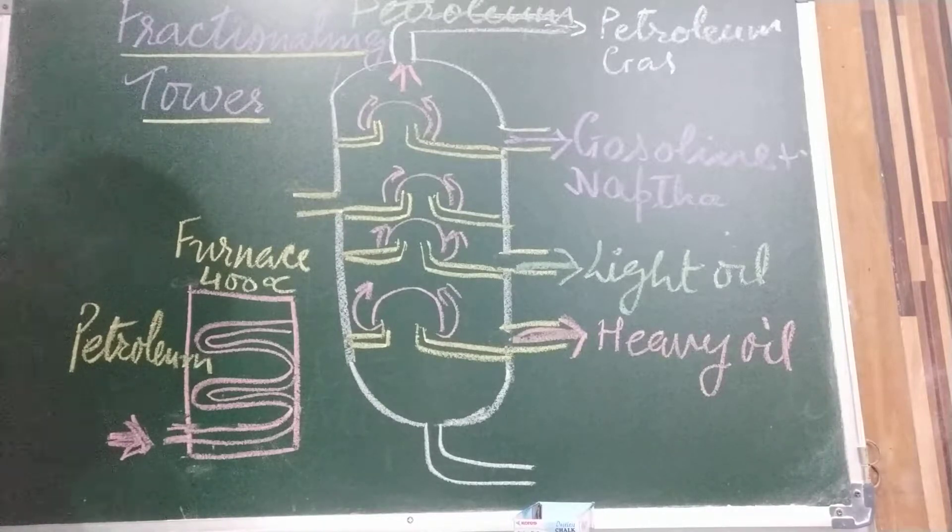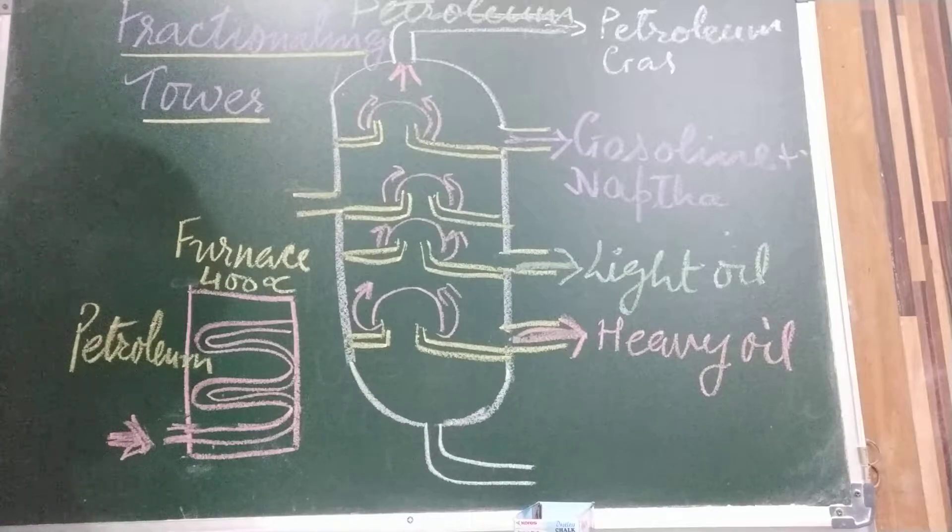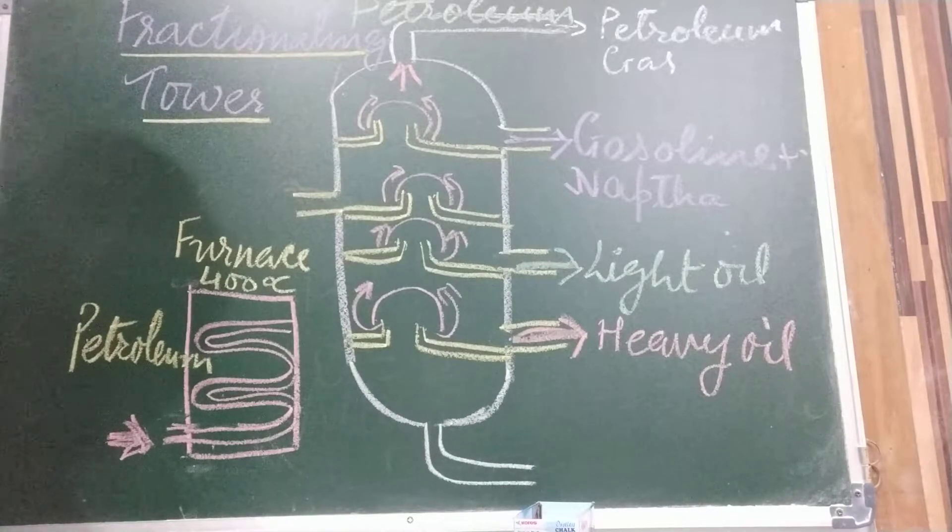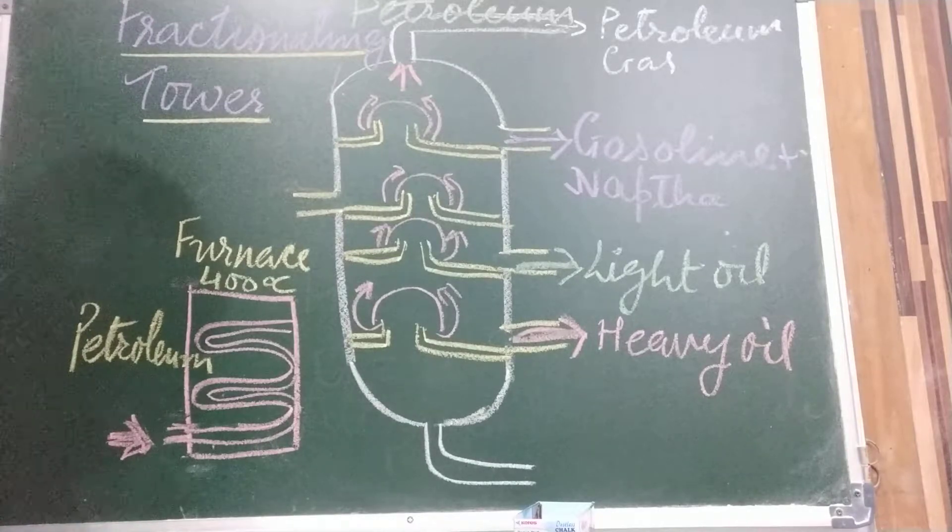In India, oil is obtained from oil wells in Assam, Gujarat, Bombay High, in the deltas of the rivers Godavari and Kaveri, and other places are also there where we get this petroleum.